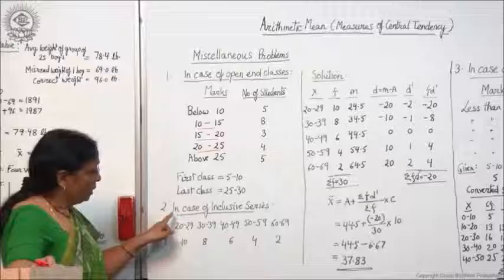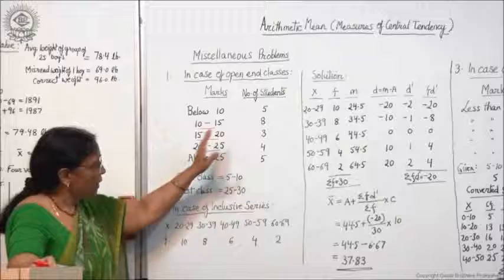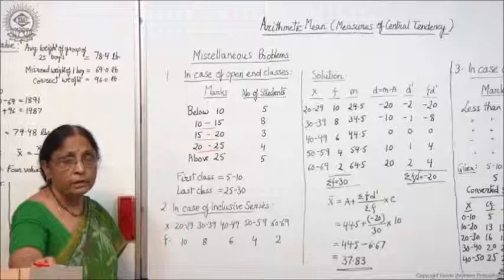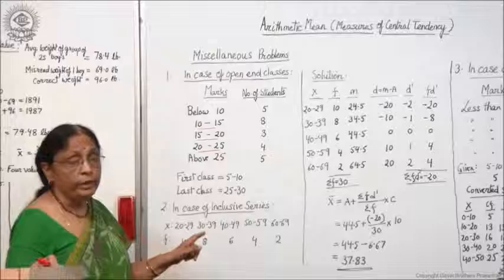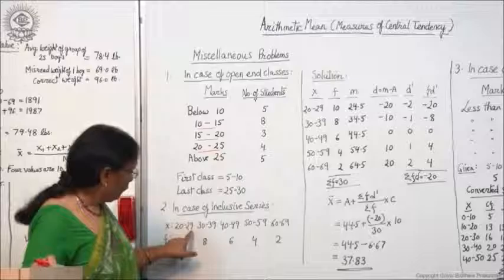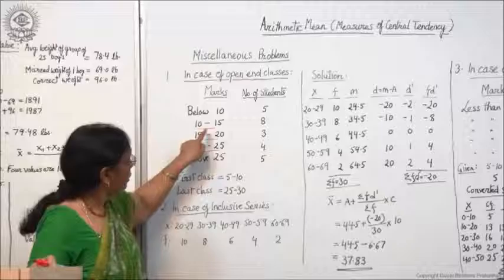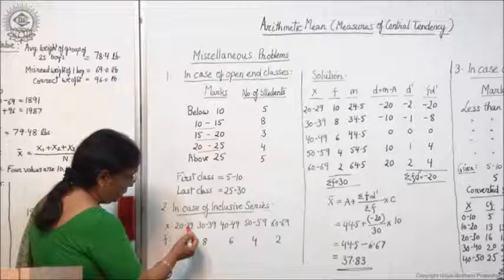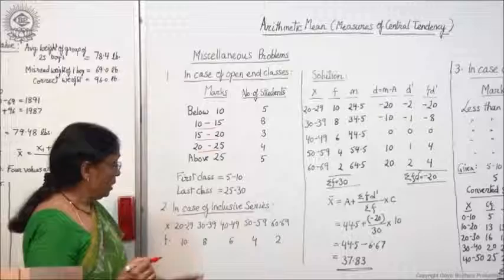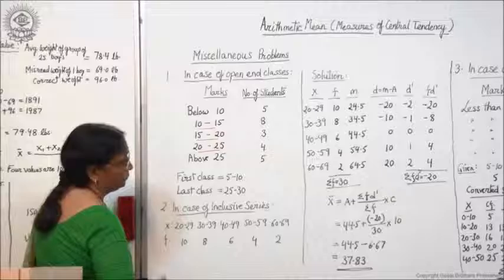The second problem may be when you get the inclusive series — this was open-end class and second is when you get the inclusive series. Then how will you calculate arithmetic mean? This is the case of inclusive series. Now what do you mean by inclusive series? Here this is 20 to 29, then 30 to 39, then 40 to 49 — you see there is a gap: 20 to 29, then 30 to 39, like this. So this is known as inclusive series, and frequency is given here.